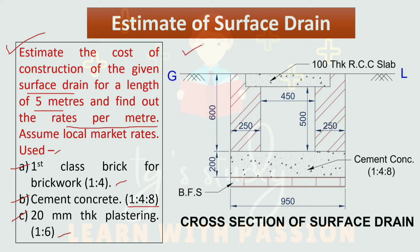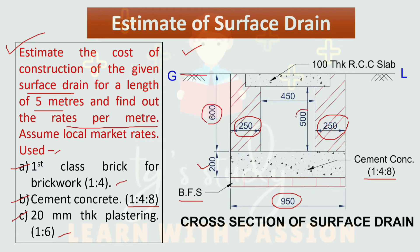Here we can see the cross-section of the surface drain. For better understanding I will describe in Bengali. Here we can see the GL position, meaning ground level. The first setup is BFS — single layer brick flat soling. The total width of the drain is 95 mm. Next, the cement concrete bed is 1:4:8 ratio, with a thickness of 200 mm. The wall dimensions are 250 × 250 × 200 mm.